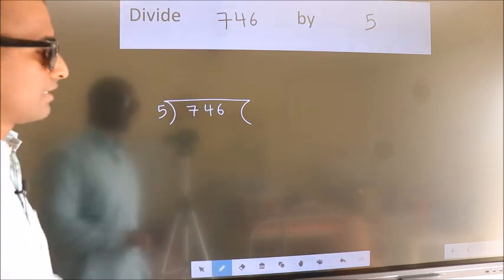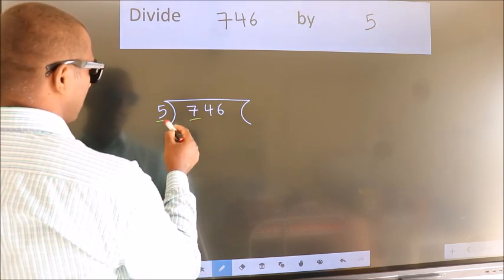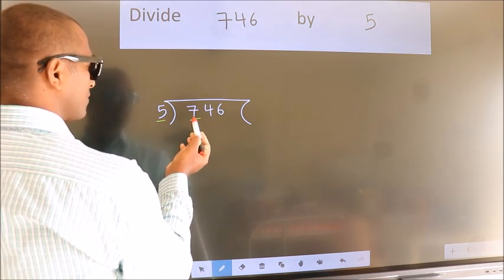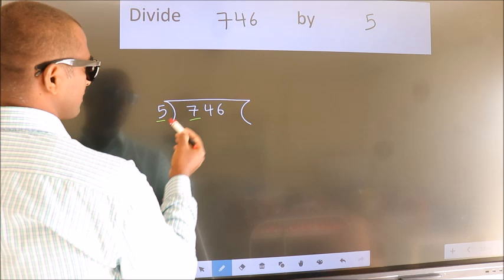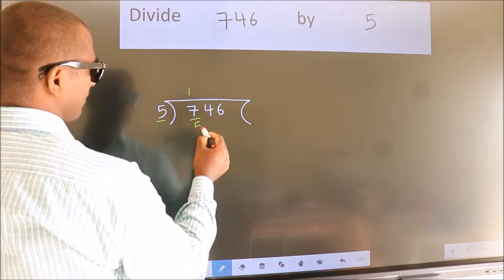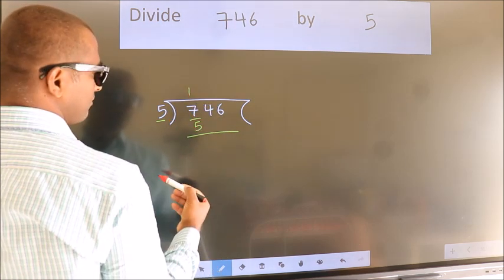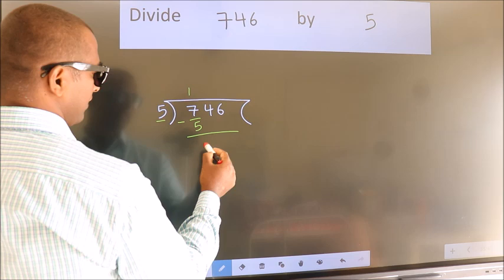Next. Here we have 7, here 5. A number close to 7 in the 5 table is 5 once 5. Now, we should subtract. We get 2.